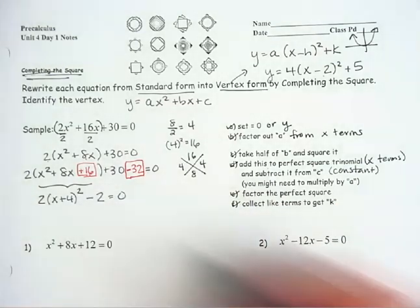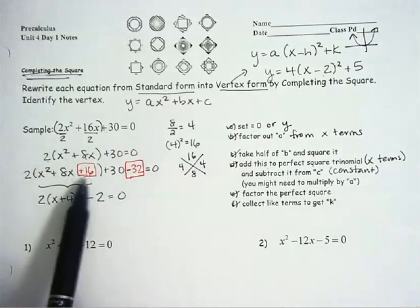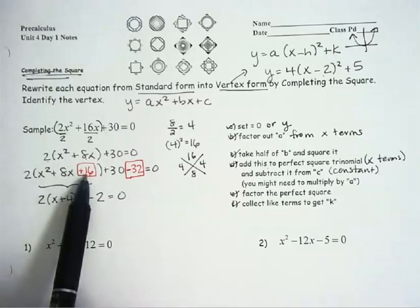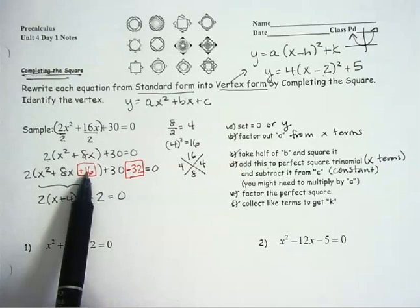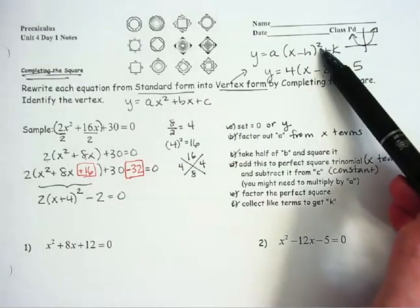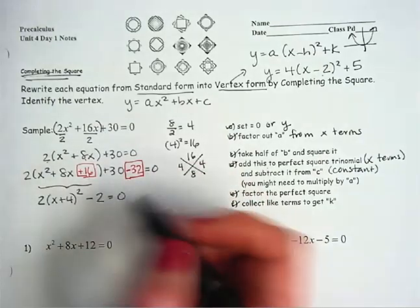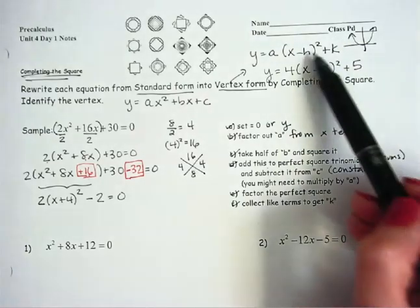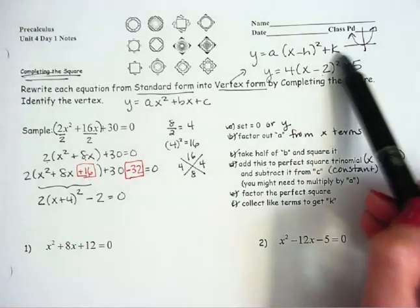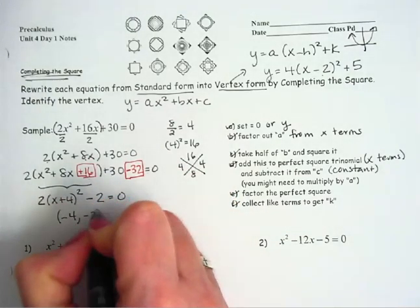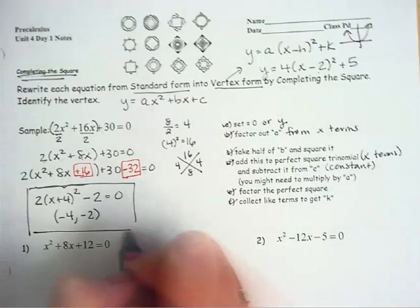That is the collecting like terms to get your k and I factored the perfect square. So the reason why this method is called completing the square is when we didn't have the 16 here, when I just had a space that I was trying to fill, we were looking for the missing piece that would make this a perfect square. So once I put that 16 there, I completed the square. I completed the squared group. And so that's why this method has that name. And then we're also being asked to identify the vertex. So the vertex is whatever's in the position of h and whatever is in the position of k. And in this case, that's going to be (-4, -2).